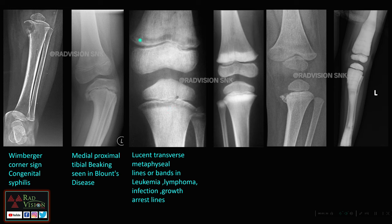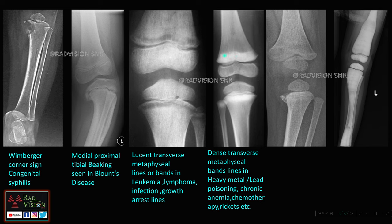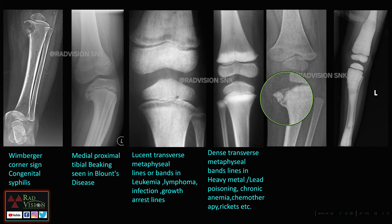These are lucent transverse metaphyseal lines or bands. Next, dense transverse metaphyseal bands are commonly seen in heavy metal poisoning or lead poisoning, chronic anemia, chemotherapy, rickets, etc. Here you can clearly see this is a metaphyseal corner fracture.